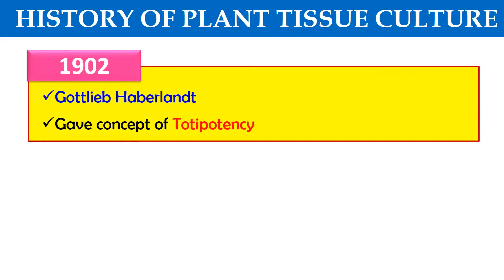First, the term totipotency. Totipotency is the ability of a single plant cell to transform or change into a complete plant. In other words, when a single plant cell can give rise to a complete plant, that is known as totipotency, and this term was given by G. Haberland.